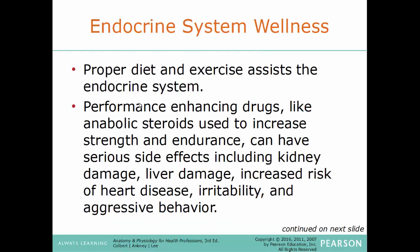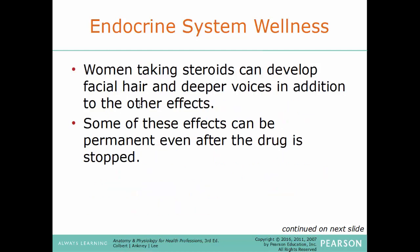Endocrine system wellness: proper diet and exercise assists the endocrine system. Performance-enhancing drugs like anabolic steroids, used to increase strength and endurance, can have very serious side effects including kidney damage, liver damage, increased risk of heart disease, irritability and aggressive behavior — giving rise to the term 'roid rage.' Women taking steroids can develop facial hair and deeper voices, in addition to other side effects, and some of these can be permanent even after the drug is stopped.